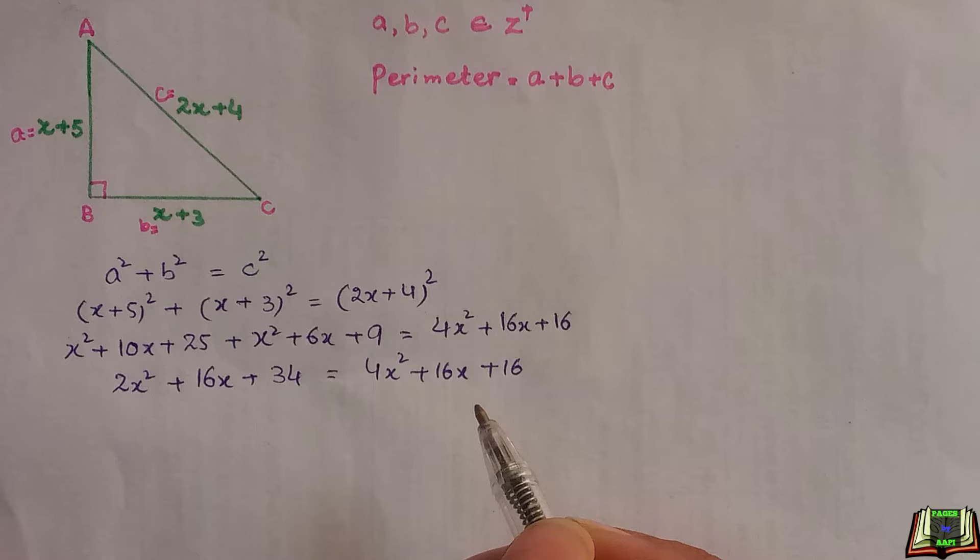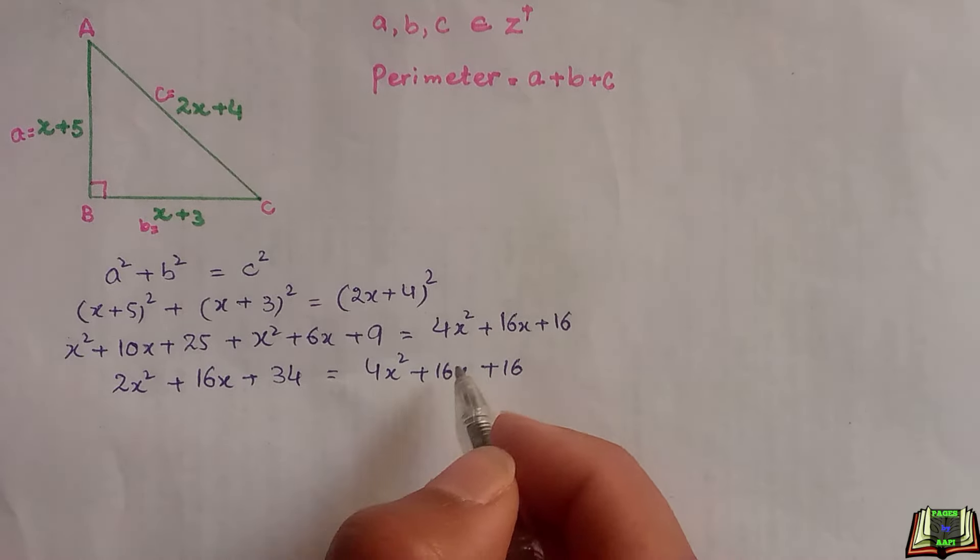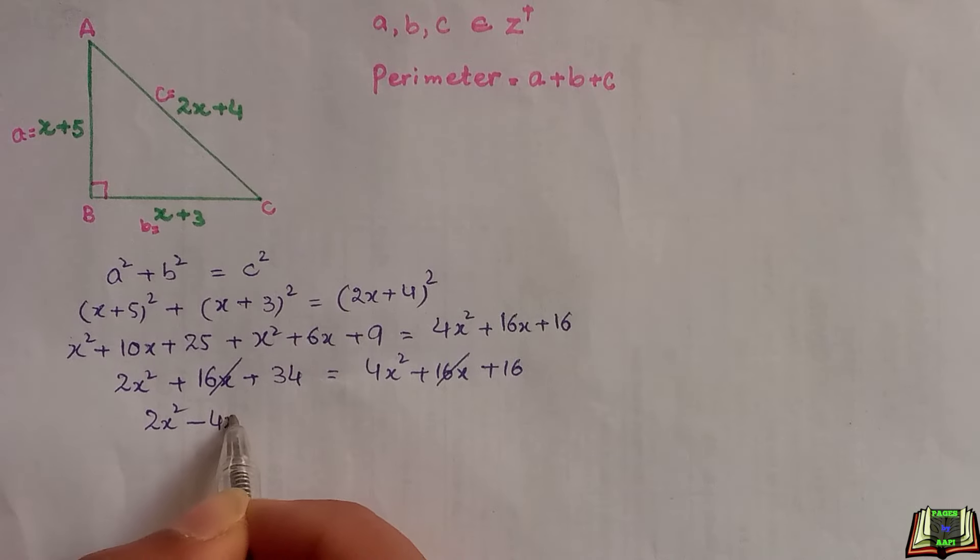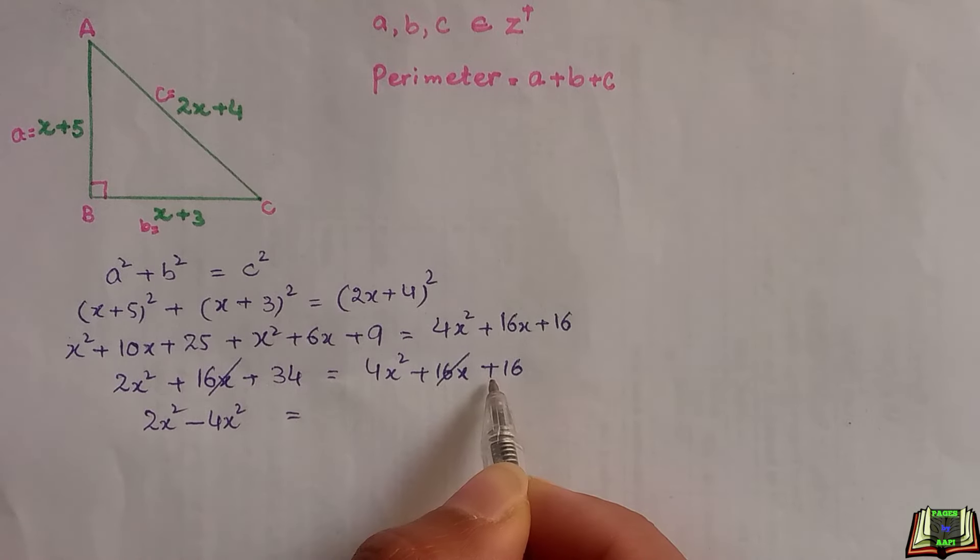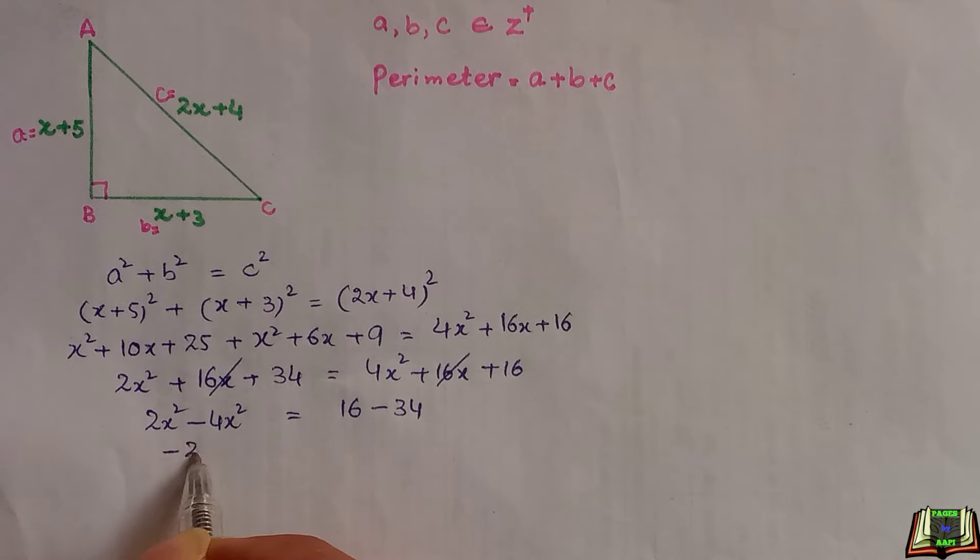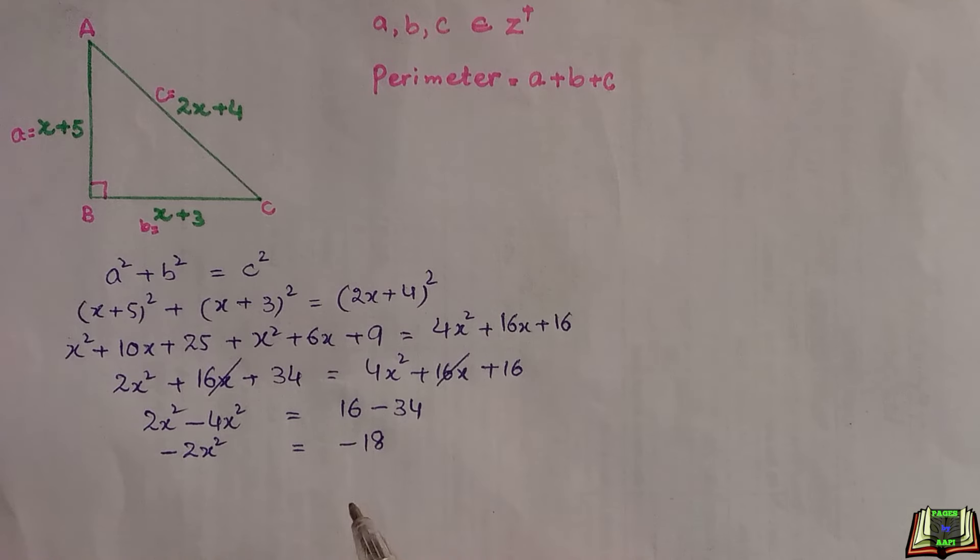We can see that 16x on right hand side and left hand side will be cancelled out. We will move 4x squared to the left hand side minus 4x squared, and 16 minus 34. 2x squared minus 4x squared is minus 2x squared, and this is equal to minus 18.